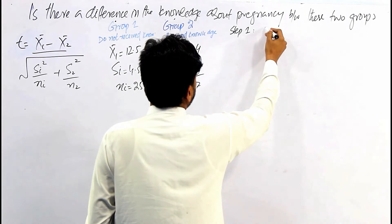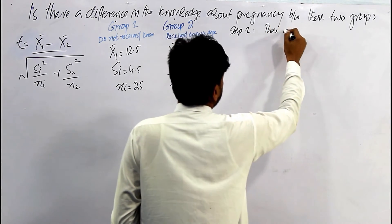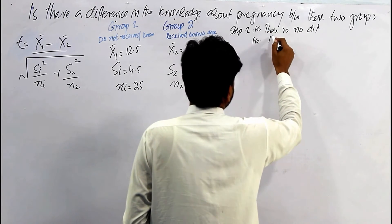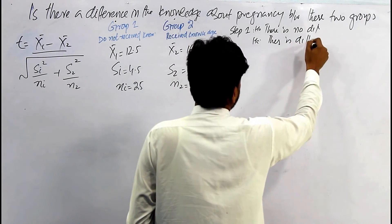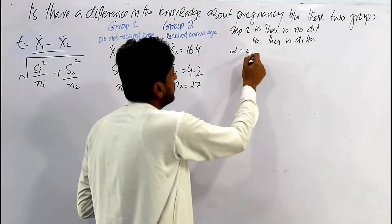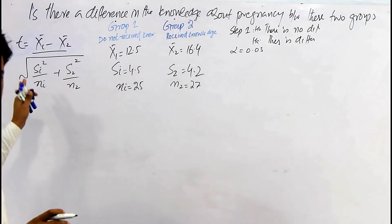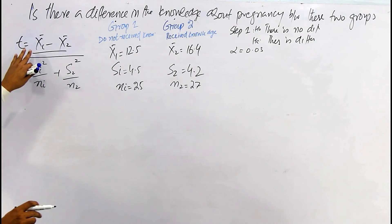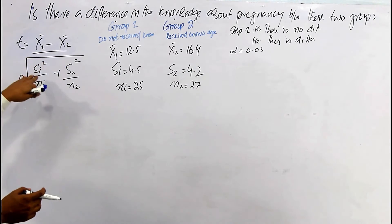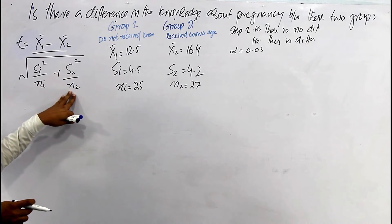Our null hypothesis is that there is no difference, and our research hypothesis is that there is a difference in knowledge between these two groups. Our alpha is 0.05. We select the independent t-test. The formula for the independent t-test is: x-bar one minus x-bar two, divided by the square root of variance one divided by n1 plus variance two divided by n2.